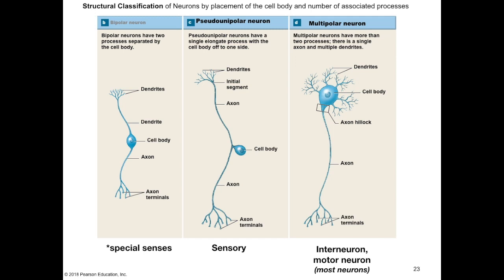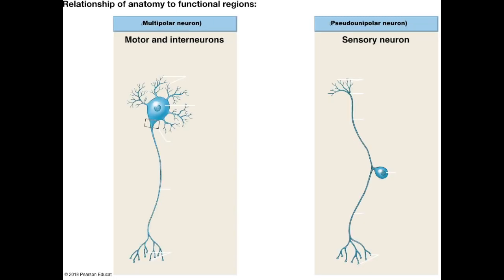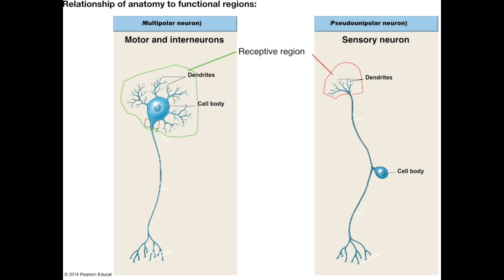We're really only going to focus on two structural categorizations of neurons: the pseudo-unipolar and the multipolar neurons, because these are the structures of the cells we're mostly talking about. What you want to notice here is the relation between the cell body and the cell processes — both the axons and the dendrites. The vast majority of neurons are interneurons, and those, along with motor neurons, have a multipolar structure, whereas sensory neurons have a pseudo-unipolar structure. The cell bodies of motor and interneurons are part of the receptive region along with their dendrites, whereas the cell bodies of sensory neurons are not involved in receiving information — their dendrites are far removed and out in the periphery, while the cell body lies close to the spinal cord.